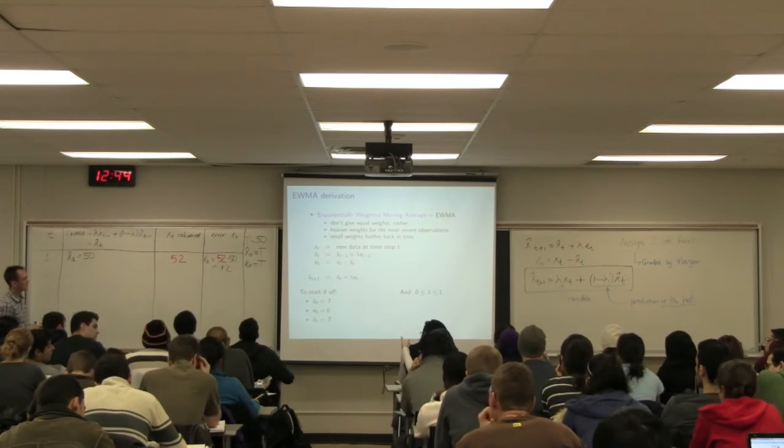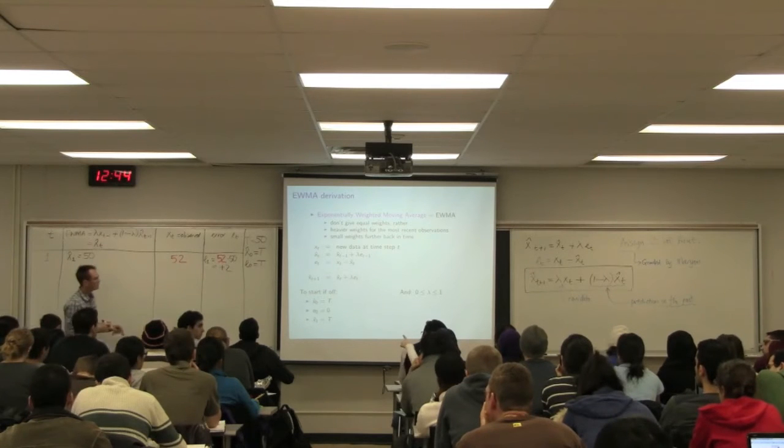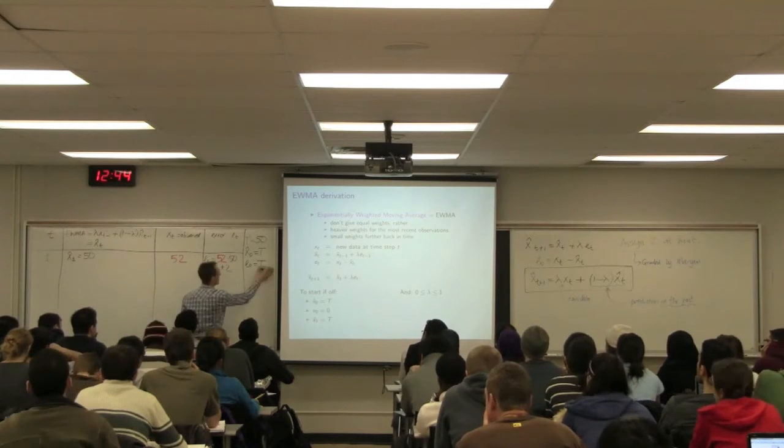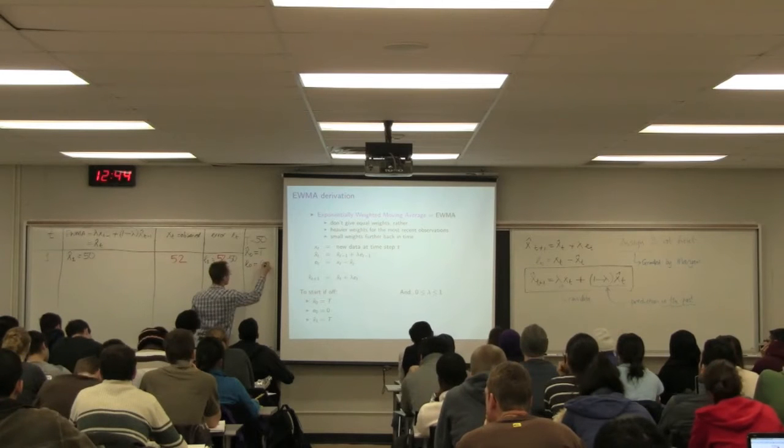So my error then at time step 1 is equal to observed minus predicted. So I'm going to say 52 minus 50 is equal to plus 2.